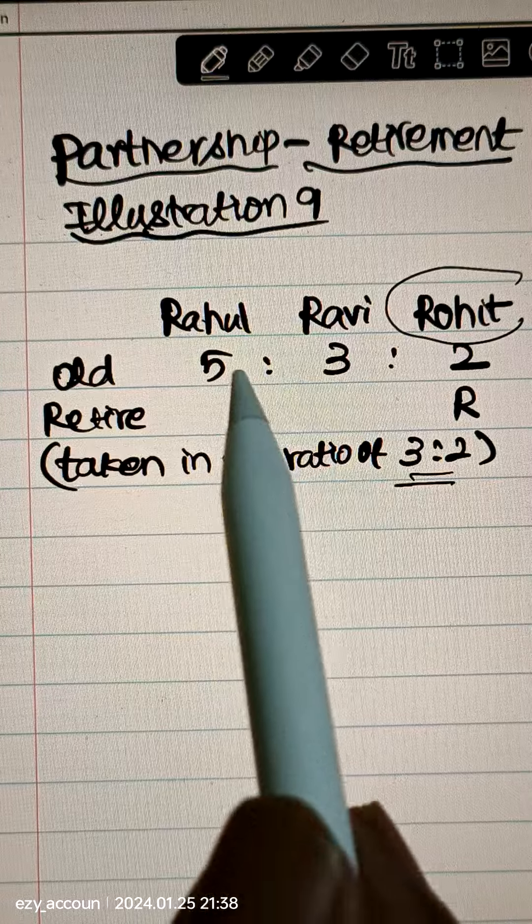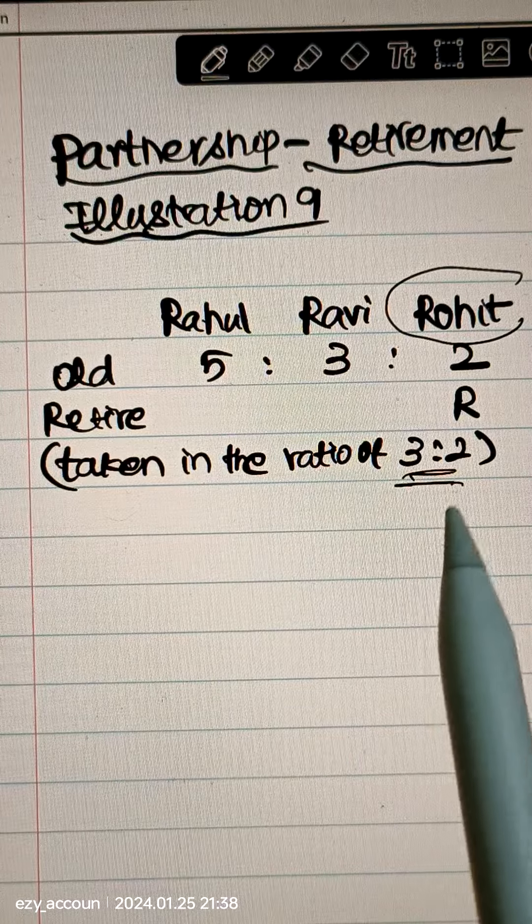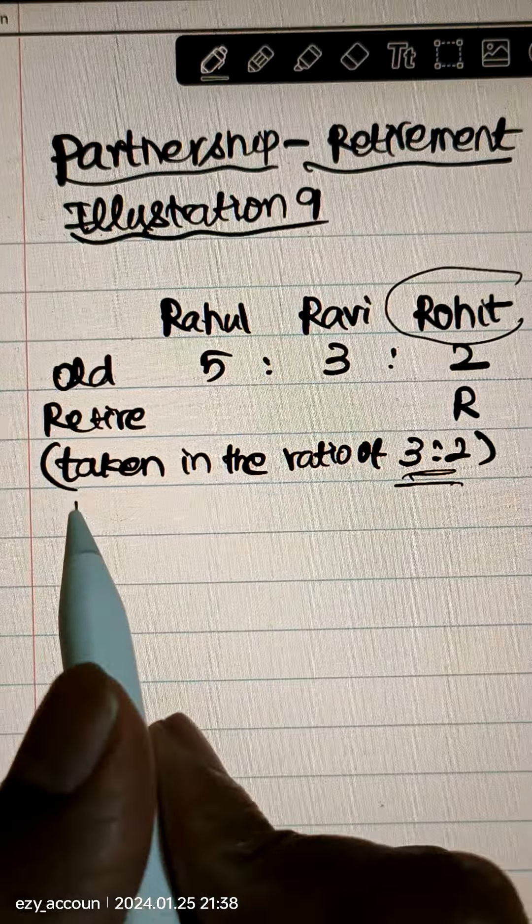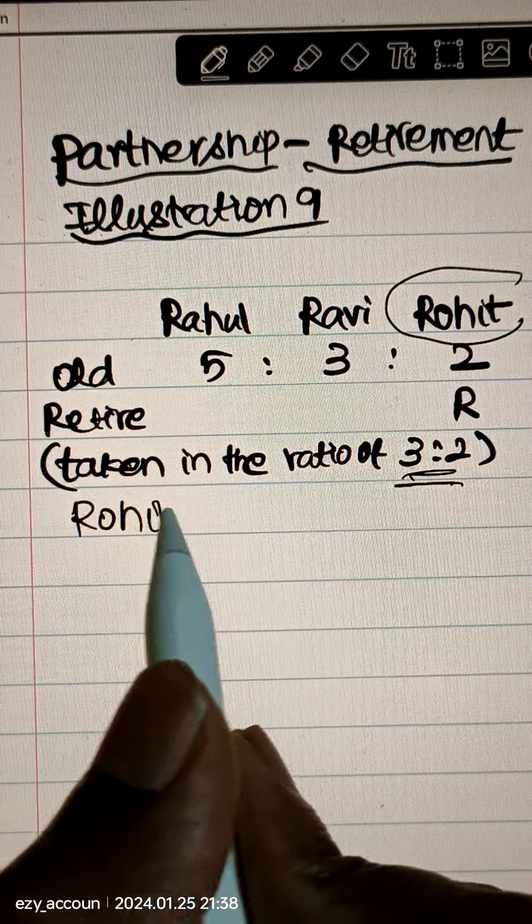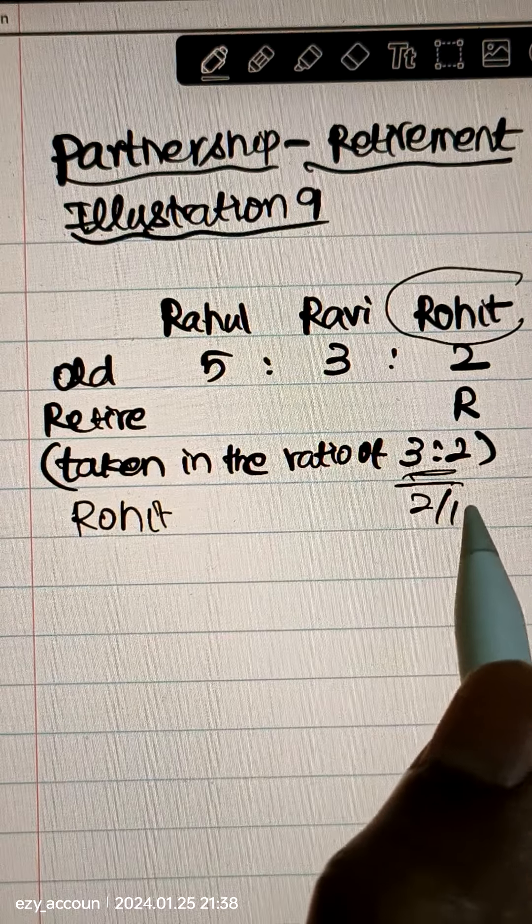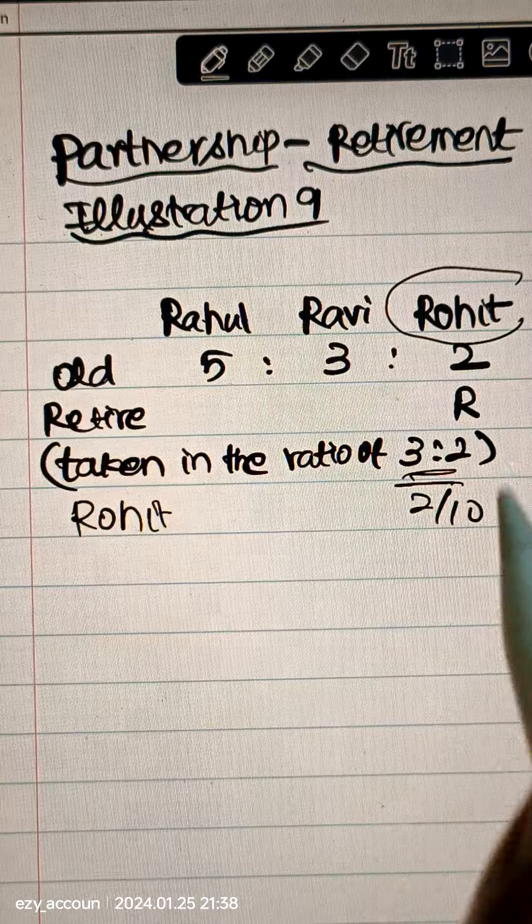The share is taken by the two partners in the ratio of 3 to 2. First, Rohit's share is 2 by 10. 10 is 5 plus 3 plus 2.